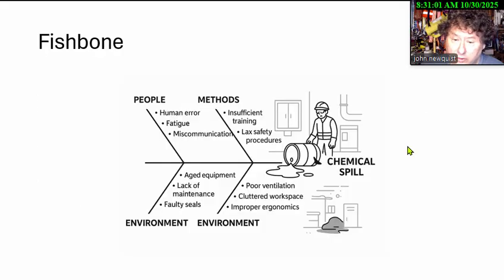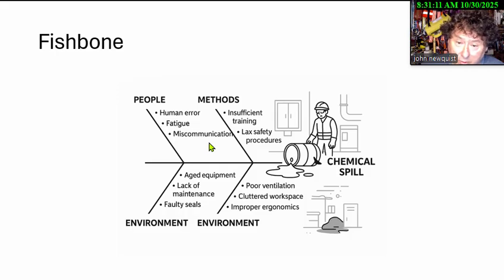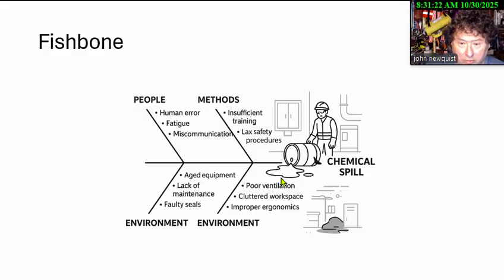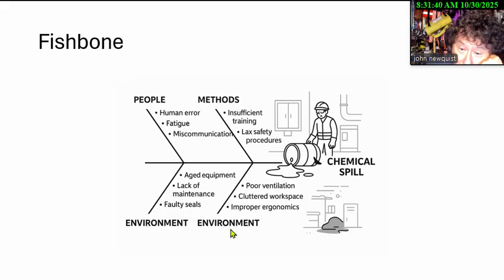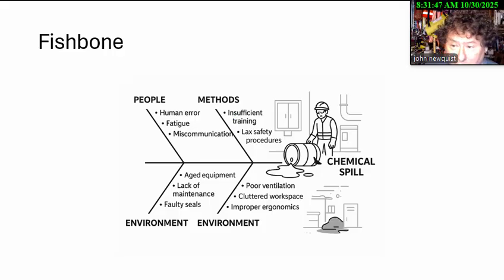The answer is fishbone — the Ishikawa diagram. We have a chemical spill as the problem at the head. You can make many ribs — six ribs, eight ribs. People: human error, fatigue, miscommunication. Methods: training, lax procedures. Equipment: aging equipment. You do this during brainstorming — everybody just lists items without discussing each one, otherwise you'll never finish. I always start with: do we have programs? What are our procedures? Then training. Then audits. Program, training, and audits are the three things always present in any analysis.